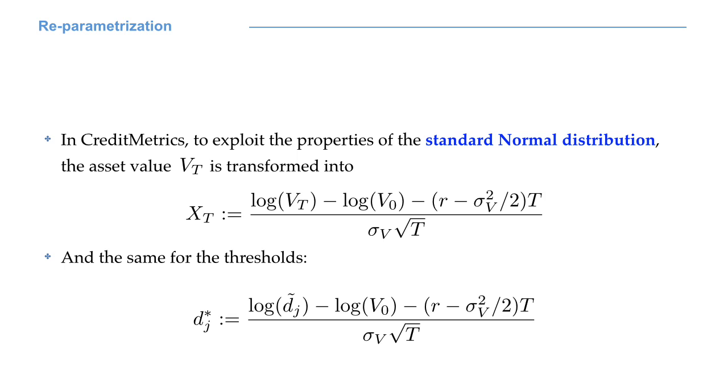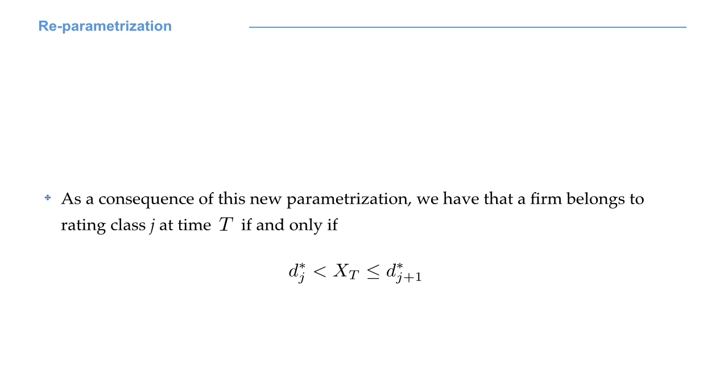In CreditMetrics, in order to exploit the properties of the standard normal distribution, the asset value V capital T is transformed into a quantity x capital T using the formula you see on your screen. For statisticians, this is nothing more than a standardization. Naturally, we do the same for the threshold values. The consequence of this transformation is that now our company belongs to class j if x capital T is between dj star and dj plus 1 star.